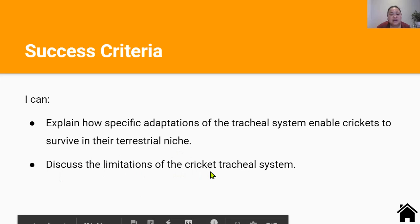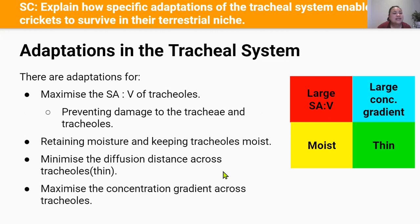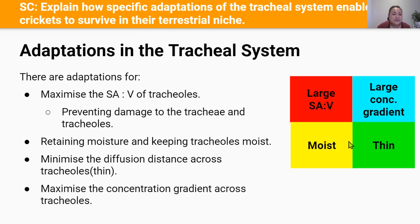The cricket tracheal system needs to have four characteristics of an efficient gas exchange system to keep up with the high metabolic demands of a flying insect. Crickets and insects in general are more susceptible to desiccation or drying out because of their small body size. So it's even more crucial for crickets to have adaptations to retain moisture, with spiracles playing an important role in controlling the balance between retaining moisture and maintaining a concentration gradient.